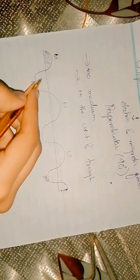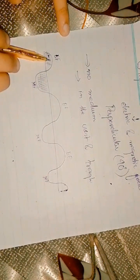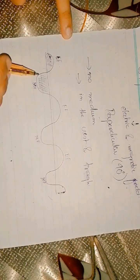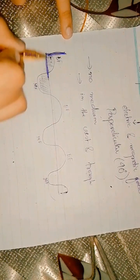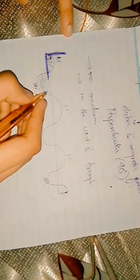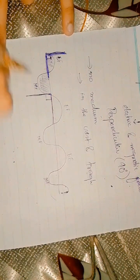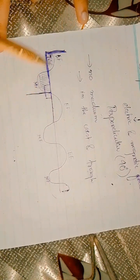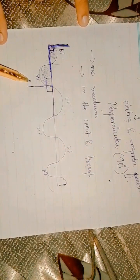As light moves in the electromagnetic wave, it travels in the form of crest and trough. The electric and magnetic fields are making a 90-degree angle with each other. That is why we say that the electric and magnetic fields are both perpendicular, having an angle of 90 degrees.